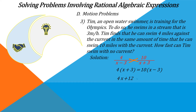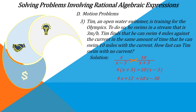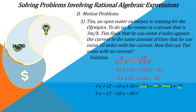Simplifying the equation, we have 4X plus 12 is equal to 10X minus 30. Adding negative 10X and positive 30 to both sides: 4X plus 12 minus 10X plus 30 equals 10X minus 30 minus 10X plus 30. This gives us negative 6X plus 42 is equal to 0.